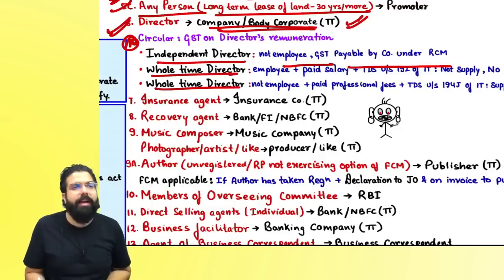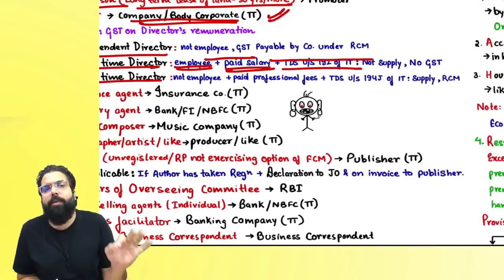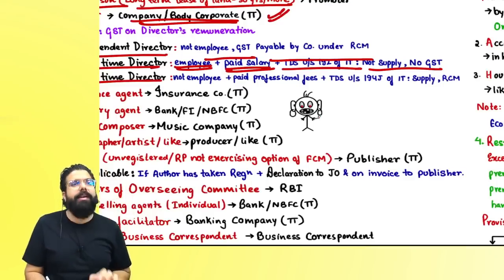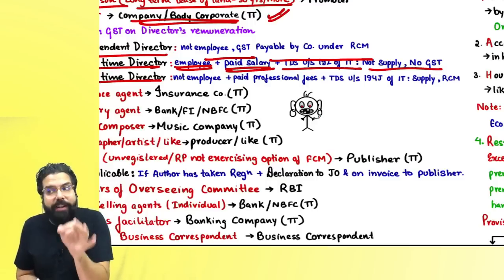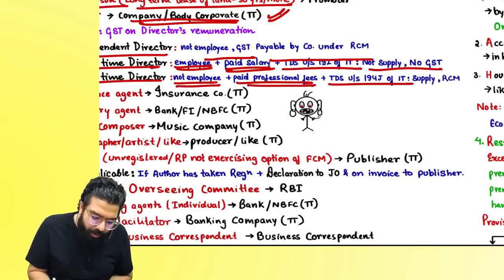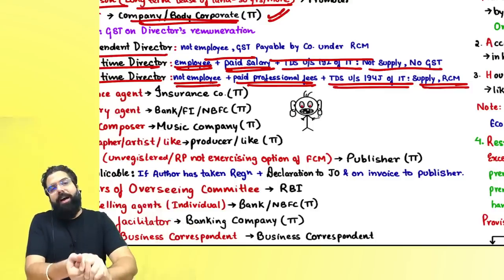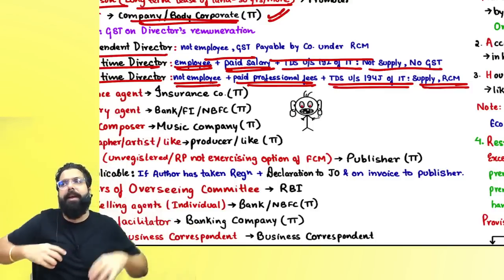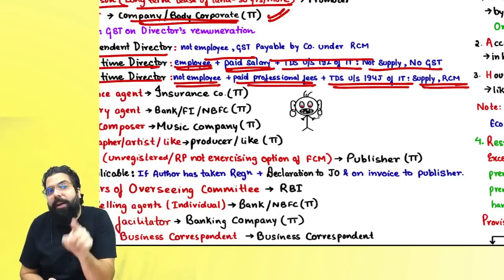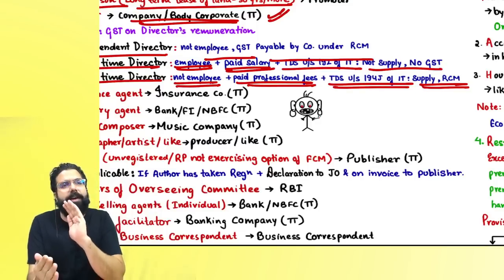For whole-time directors: if the whole-time director is an employee receiving salary, and the company deducts TDS under Section 192 of the Income Tax Act, it is neither supply of goods nor supply of service — no GST. However, if the whole-time director provides services not in the capacity of an employee, the company pays professional fees with TDS under Section 194J of the Income Tax Act, it is a supply and reverse charge applies — the company pays GST under RCM.